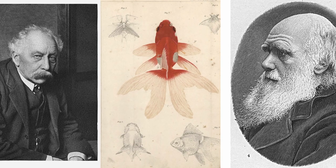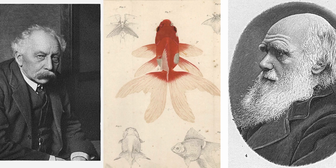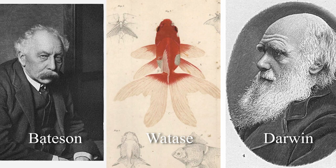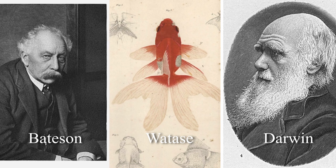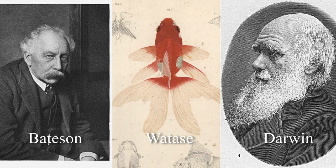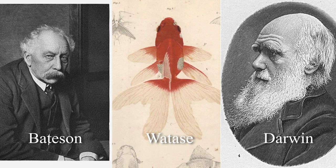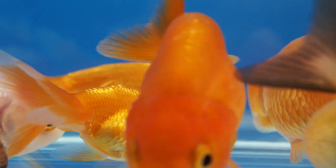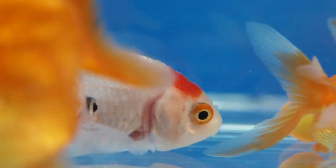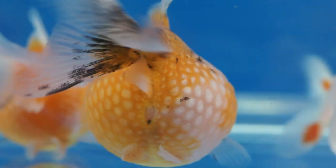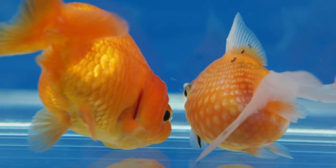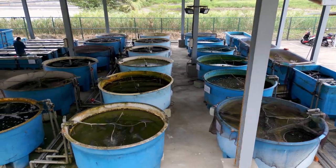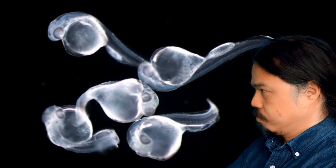Despite their differences in research topics and conclusions, Darwin, Watase, and Bateson all knew the value of observing goldfish phenotypes that had been selected and genetically fixed by breeders, to gain useful insights into natural evolutionary processes. Perhaps some of you have also been intrigued by the fascinating variety of goldfish, just like the early scientists who studied goldfish morphology and development. I have also been fascinated by how goldfish varieties develop from fertilized eggs. This is why I decided to focus my studies on goldfish.